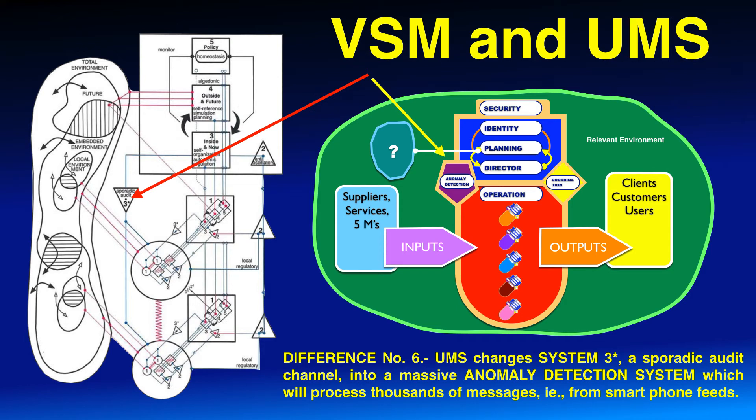Difference number six: the UMS changes system three-star — a sporadic audit channel — and turns it into a massive anomaly detection system which will process thousands of messages, for instance from smartphone feeds.